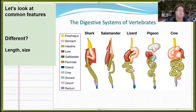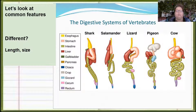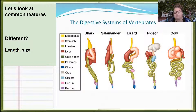Let's look at the common features — what is the same and what is different. Take a look at these diagrams comparing the shark, salamander, lizard, pigeon, and cow. Think about what organs they all have and what differs. You can use the color coding since they don't all look the same. Hit pause and discuss as a class.